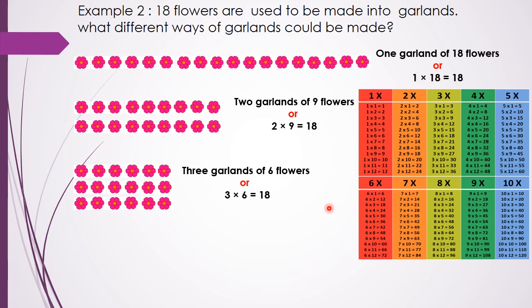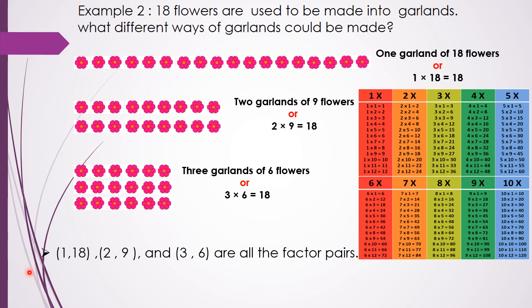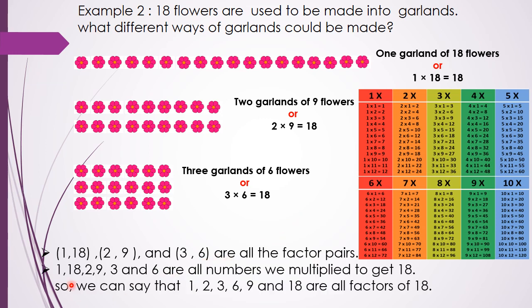So these are the factor pairs: 1 and 18 is the first factor pair, 2 and 9 is the second factor pair, and 3 and 6 is the third factor pair. To put all the factors together in order from smallest to greatest, 1, 2, 3, 6, 9 and 18 are all the factors of 18.